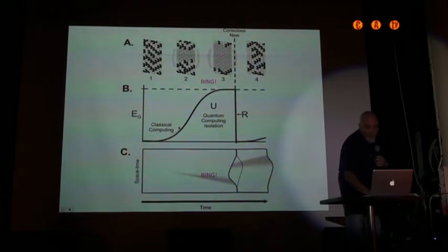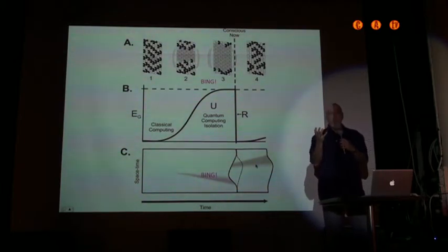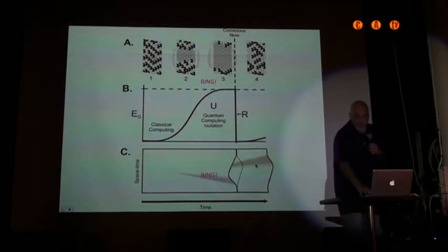There's the Schrodinger evolution by the Schrodinger equation, continuous. So it'll reach threshold at R reduction, OR reduction. And here's what's happening in space-time geometry. There's a separation in space-time geometry here, and it collapses here to one. So one branch of this universe dies off, and this one continues, and that's the choice or selection made. It could be a particular perception or a particular choice.